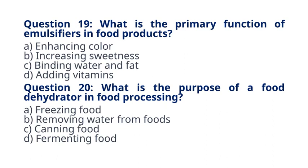Question 20. What is the purpose of a food dehydrator in food processing? A. Freezing food B. Removing water from foods C. Canning food D. Fermenting food. The correct answer to question 20 is option B. Removing water from foods. Explanation: a food dehydrator removes water from foods, preserving them by inhibiting the growth of spoilage microorganisms.